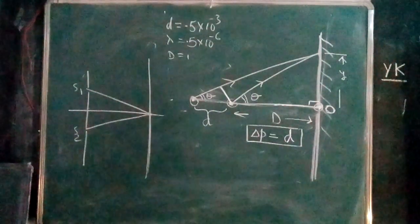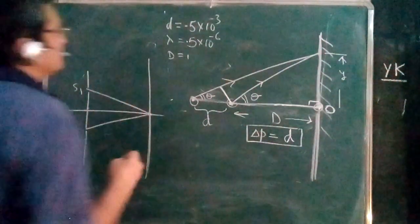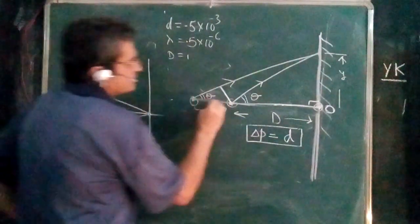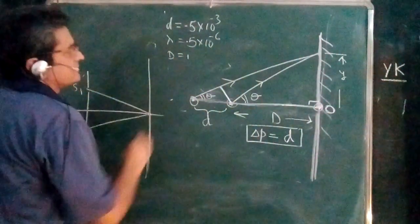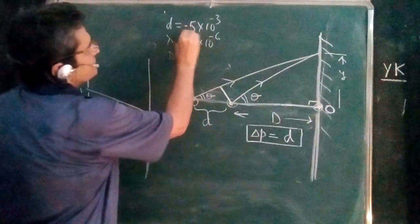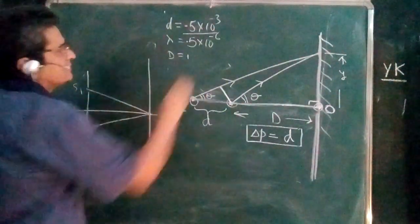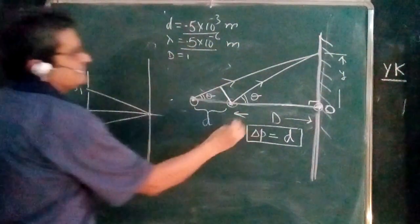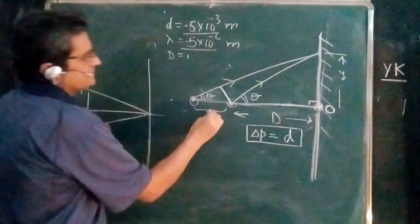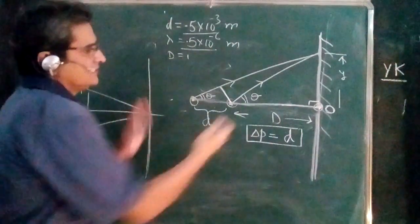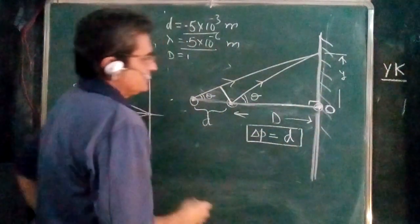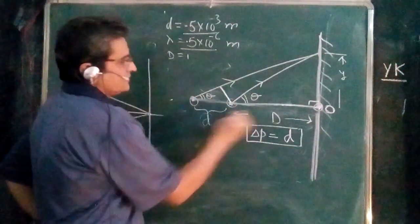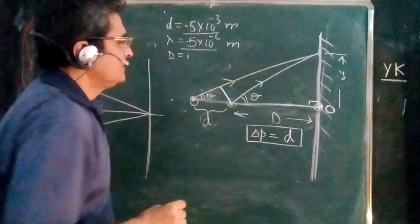We will take an interesting problem from DC Pandey. Here we are given two sources placed in a straight line joining the screen perpendicular to the screen. The distance d is 0.5×10⁻³ m, wavelength is 0.5×10⁻⁶ m, and the greater distance D is 1 meter. D is quite small as compared to D — the diagram is exaggerated so we can understand the dimensions.